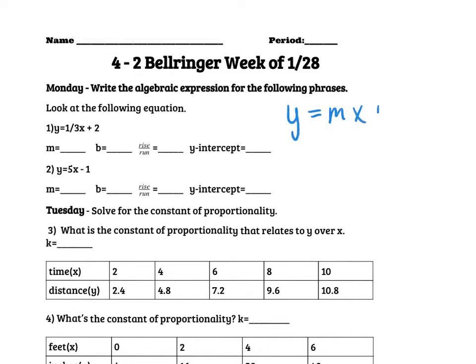We said our slope-intercept form here. This M represents your rise over your run, your slope, your change in Y over change in X.